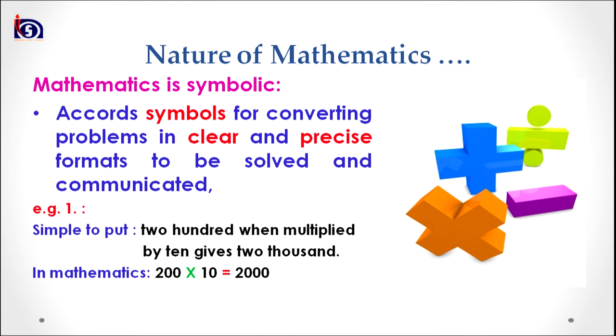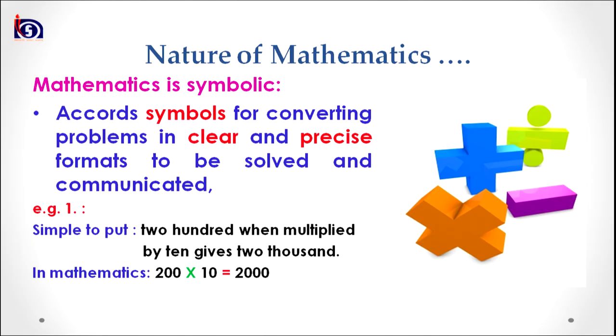There are some examples on your screen. In the first example, we have a statement we use in day-to-day life: '200 when multiplied by 10 gives 2000.' When we convert it into mathematical expression, it becomes 200 × 10 = 2000. This makes the expression more concise, precise, communicable, and comprehensible.